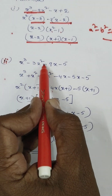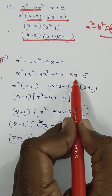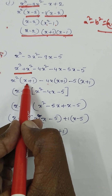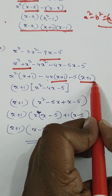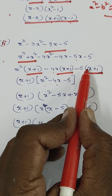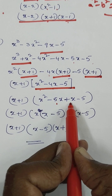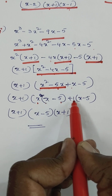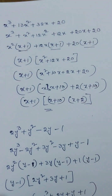So, you have to rewrite minus 3x squared by splitting it. x squared is common in the first two terms, giving x plus 1. Then 4x is common in the next terms, giving x plus 1. Then 5 is common, giving x plus 1. Total three terms have x plus 1 as common. Remaining is x squared minus 4x minus 5. Using the splitting method, write minus 4x as minus 5x plus x. Then x is common in the first pair giving x minus 5, and 1 is common giving x minus 5. So the factors are x minus 5 into x plus 1.